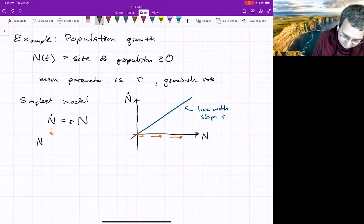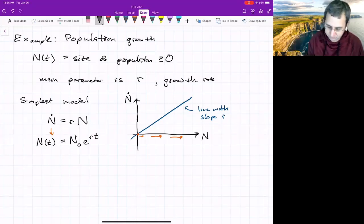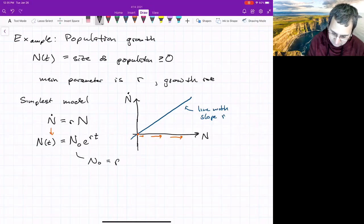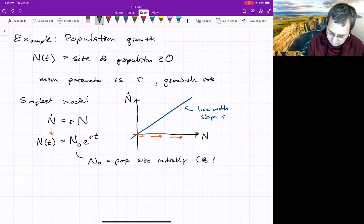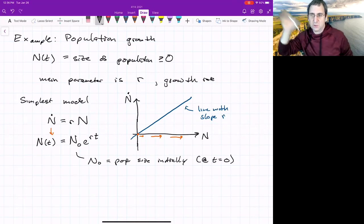It would be that the population at some time is whatever the population is at time zero, e to the RT. So exponential population growth, so N naught population size initially at T equals zero.